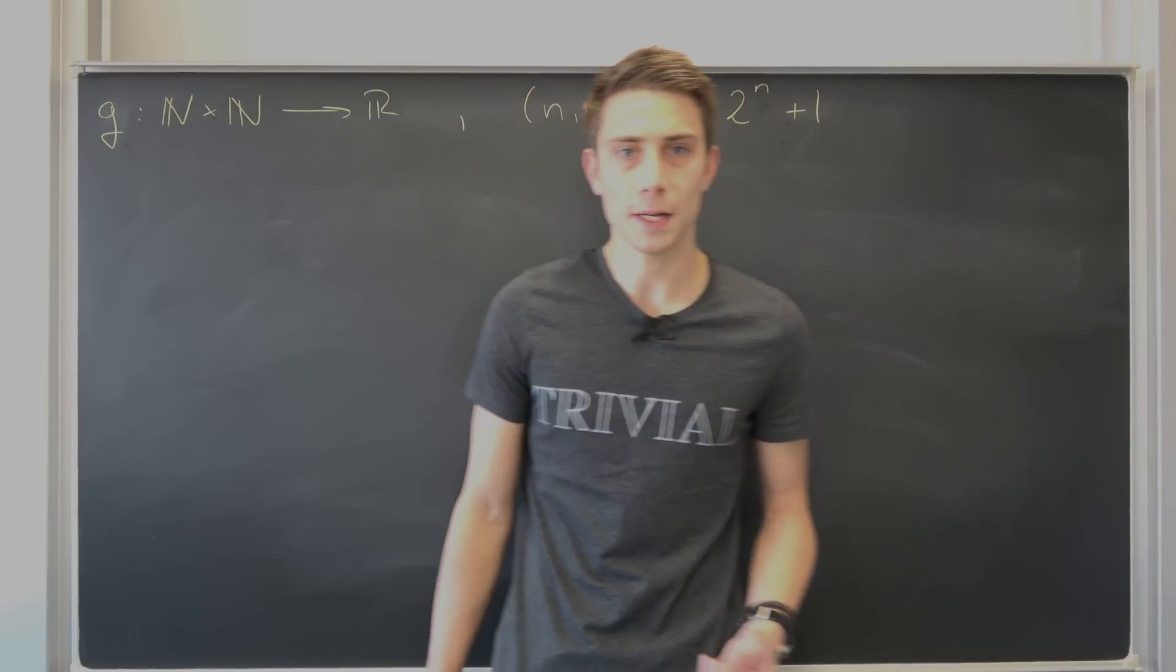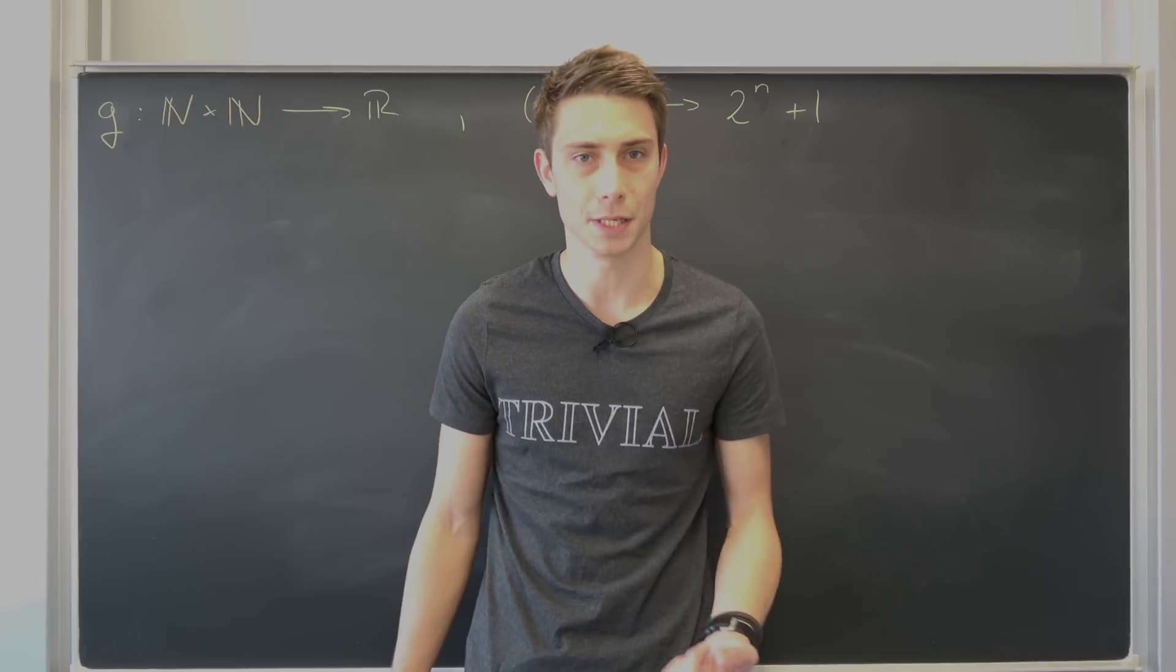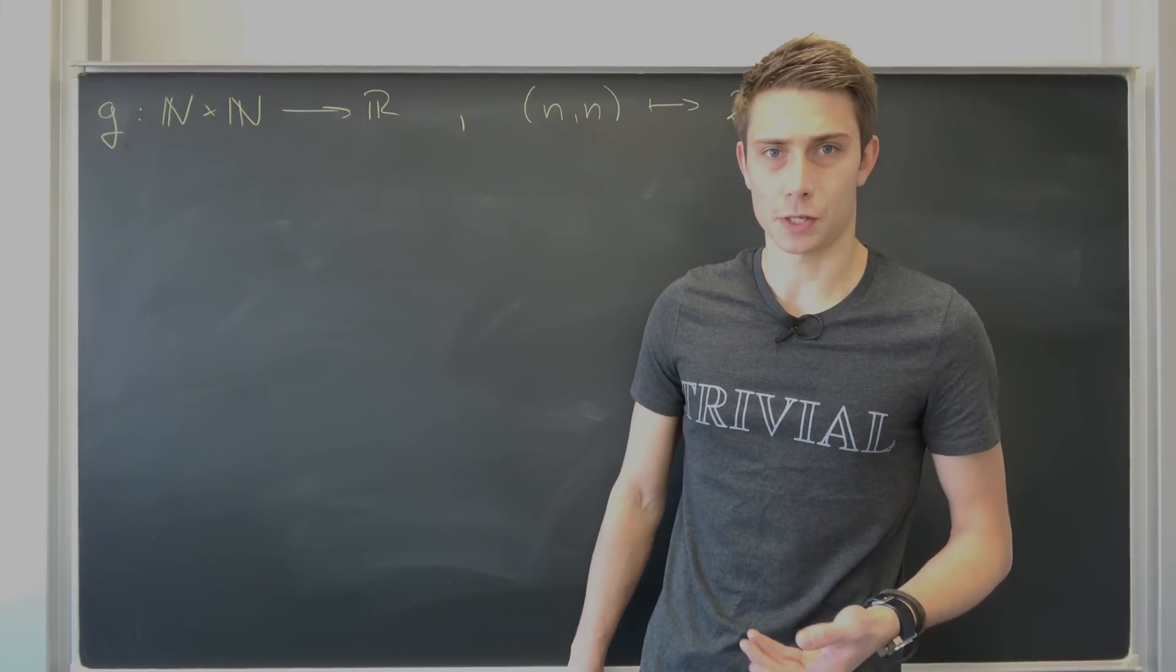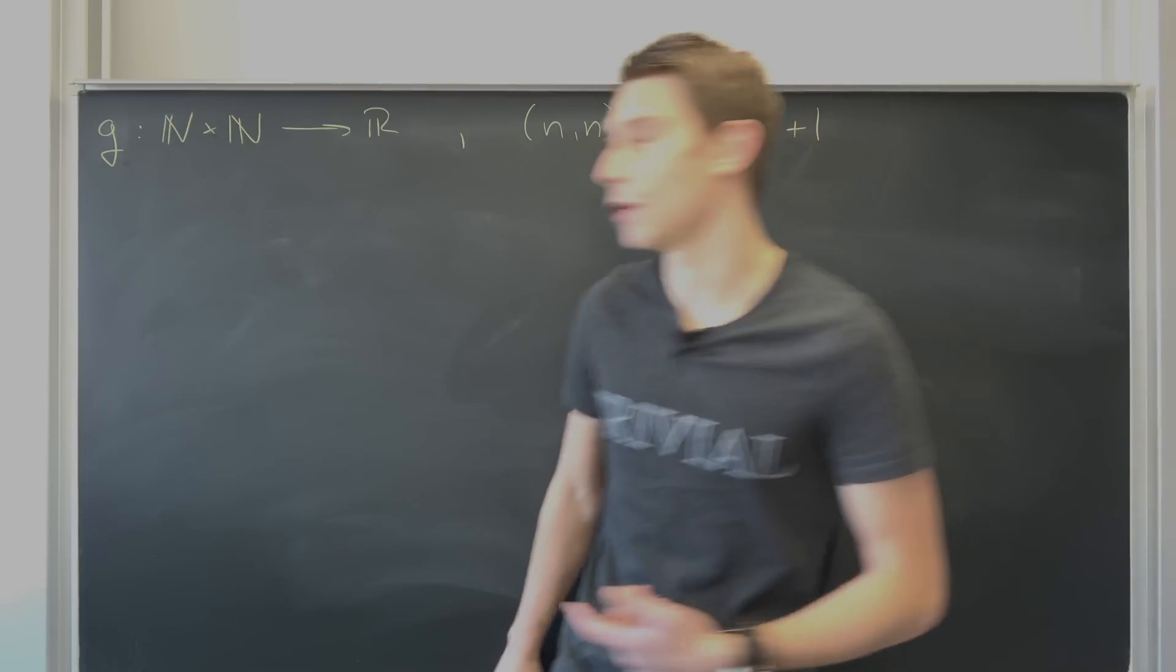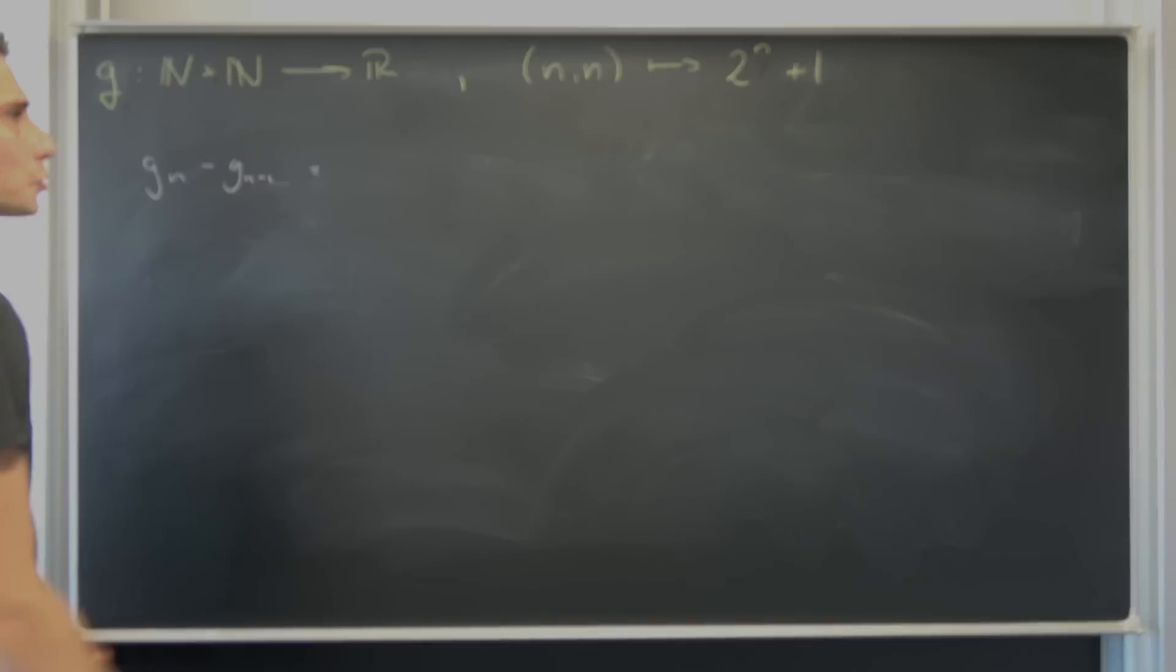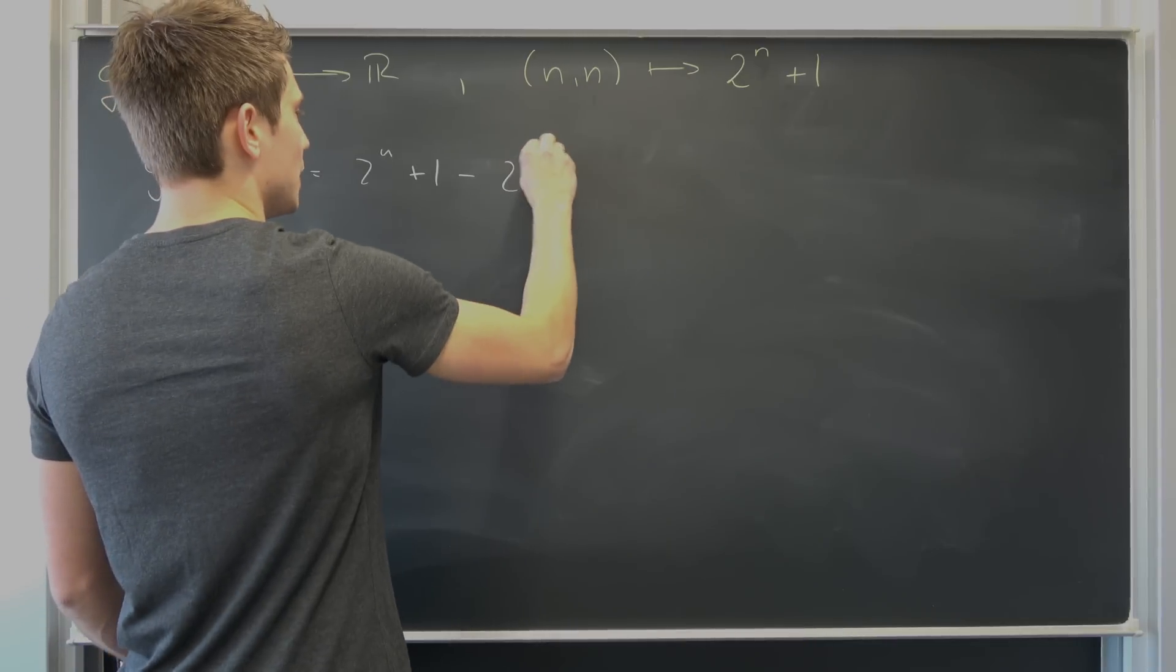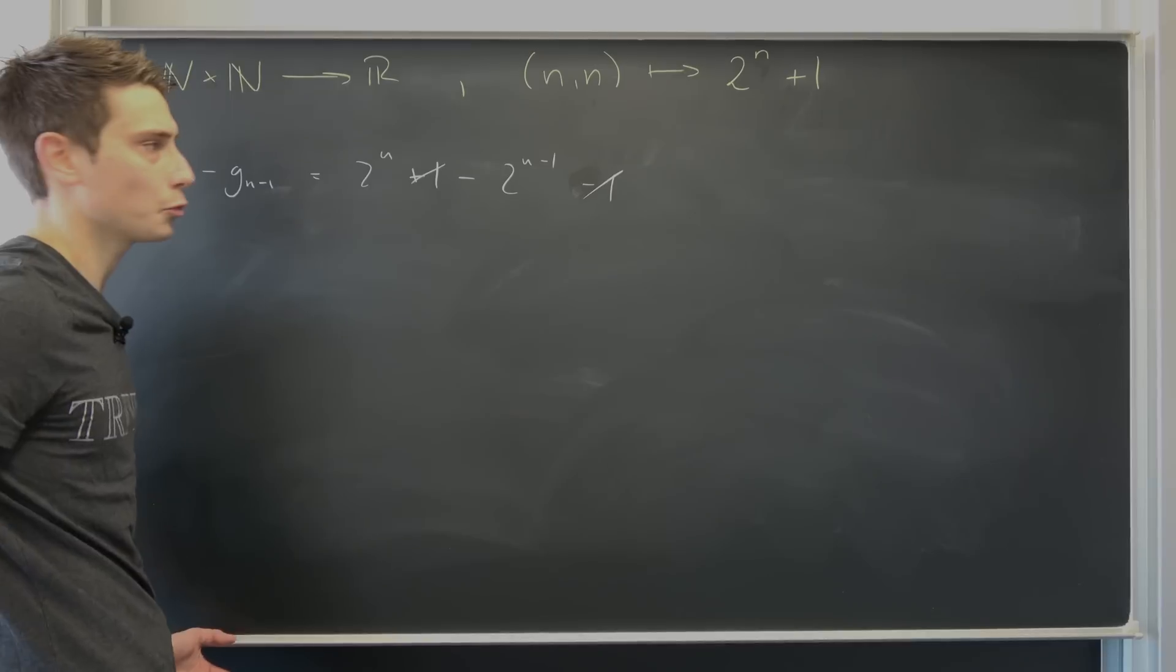Whatever you do, you can find a final expression for the n plus 1th member written a bit more nicely. And now for the second way. For the second way, I would like to write this g_n with respect to two other members. So why not create a little system of equations? Let's take g_n and subtract g_{n-1} from that. So g_n minus g_{n-1}, this is going to result in 2^n + 1 minus 2^{n-1} minus 1.